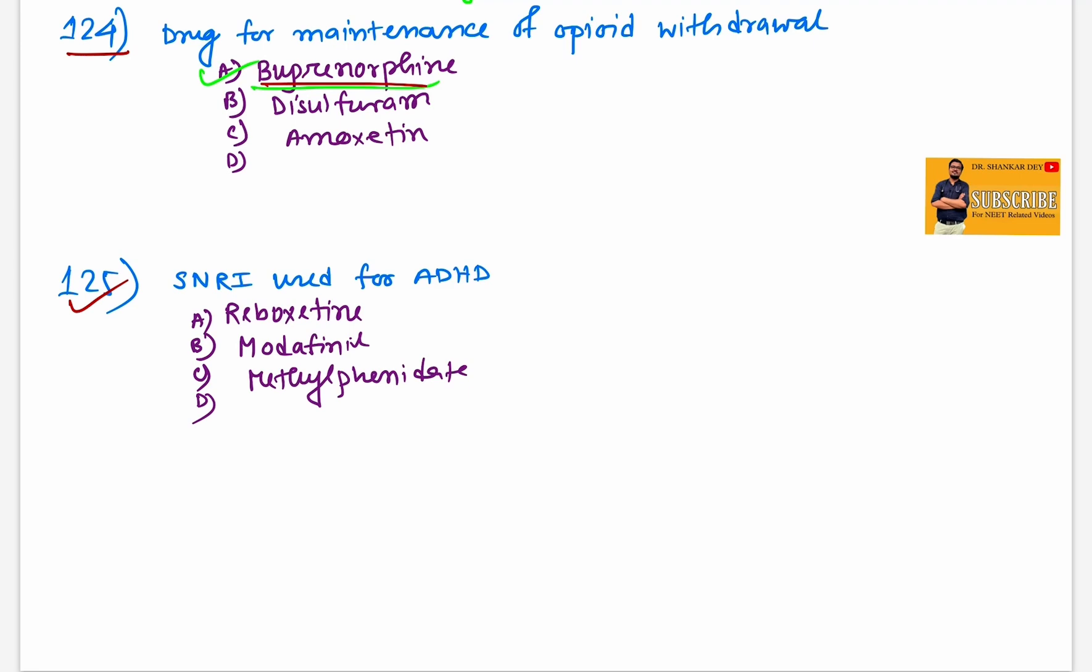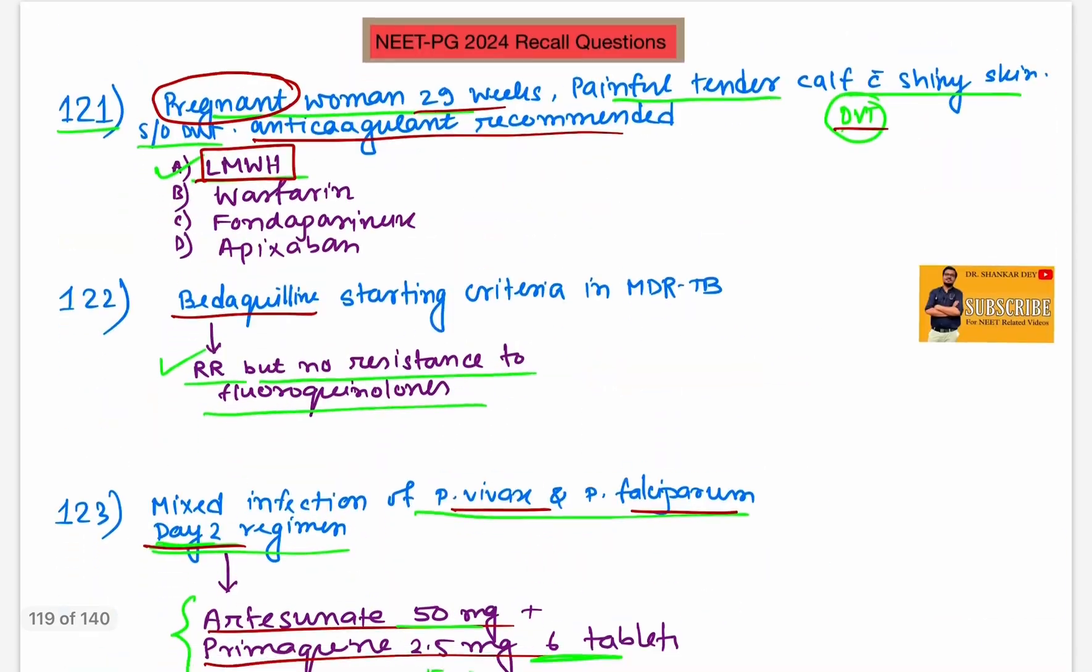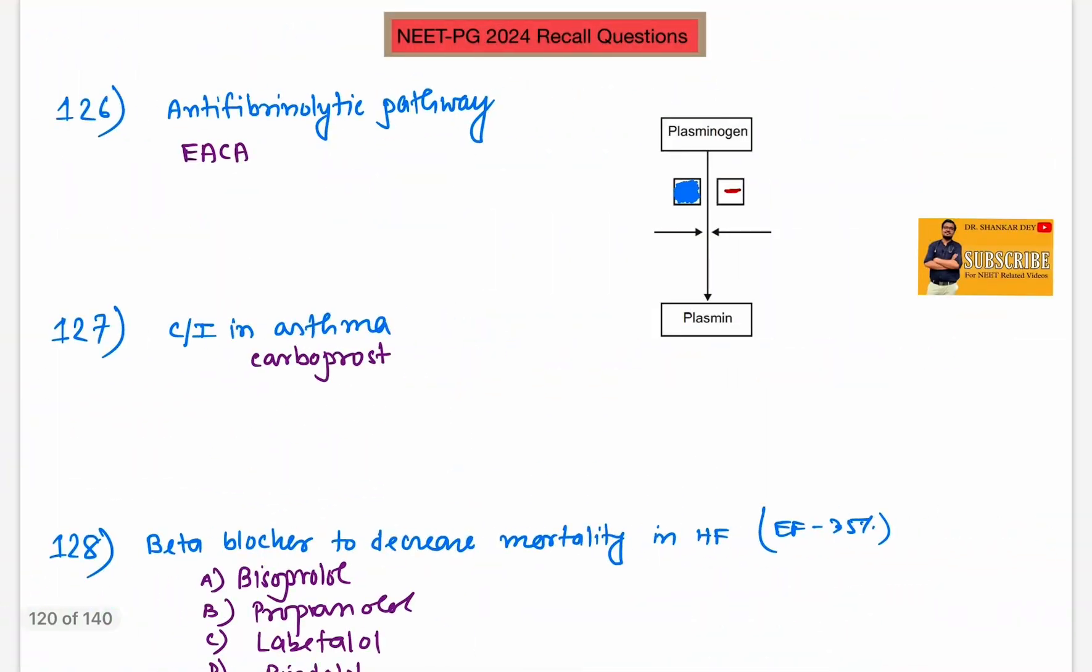Question 125: SNRI used for ADHD is reboxetine. So best answer will be reboxetine, SNRI used for ADHD. Question 126: I think one pathway was given, this pathway from plasminogen to plasmin.